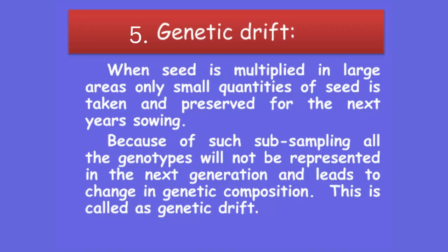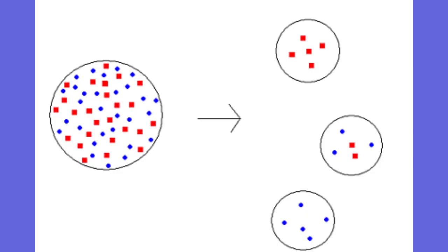The next factor is genetic drift. When seed is multiplied in large areas, only a small quantity of seed is taken and preserved for the next year's sowing. In this case, we have to make sub-samples, and not all genotypes will be represented in the next generation. This leads to changes in genetic composition, which is known as genetic drift. In the pictorial diagram shown, when you take different sub-lots from a seed lot, a different genetic makeup appears in each category of lot, resulting in a chance of genetic drift.